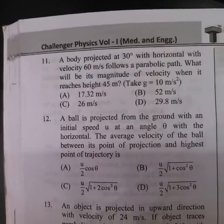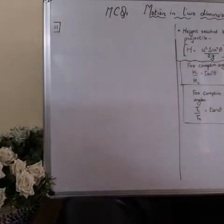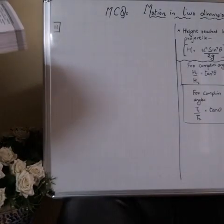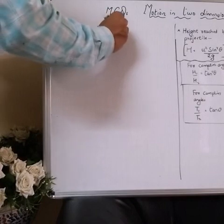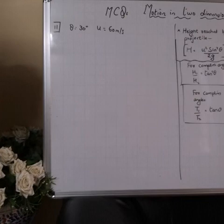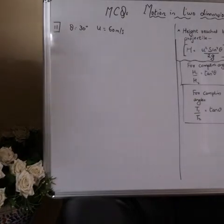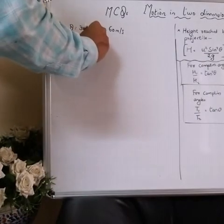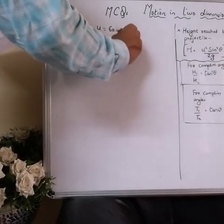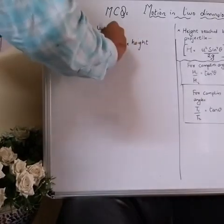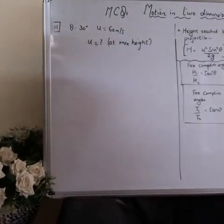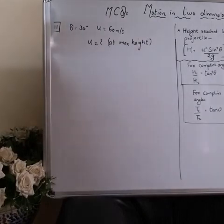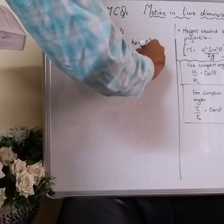Numerical 11: A body is projected at 30° with the horizontal with velocity 60 m/s following a parabolic path. First, find the maximum height: h = u² sin² θ / (2g) = 60×60×sin²30° / (2×10) = 3600×(1/4)/20 = 45 meters. So the maximum height is 45 m, and they ask for velocity at h = 45 m, which is the maximum height. At maximum height, only the horizontal component remains: ux = u cos θ.